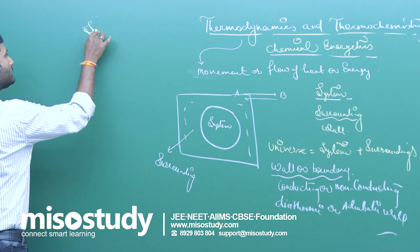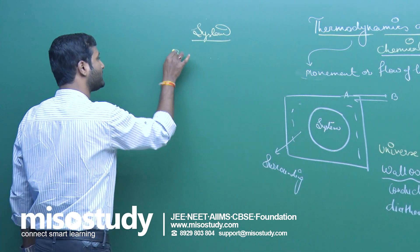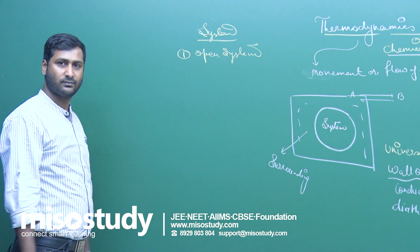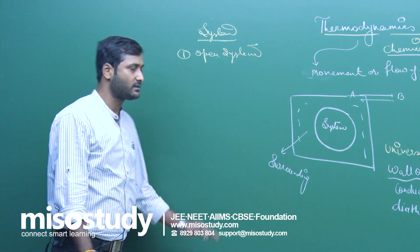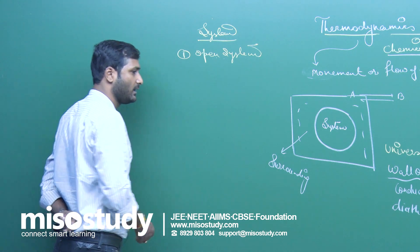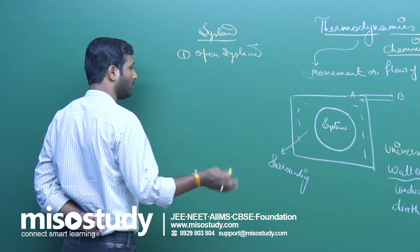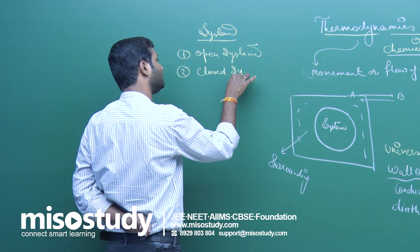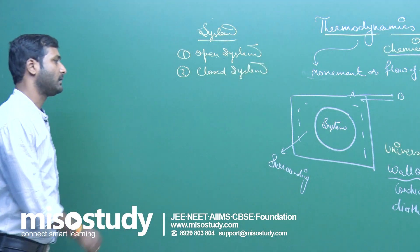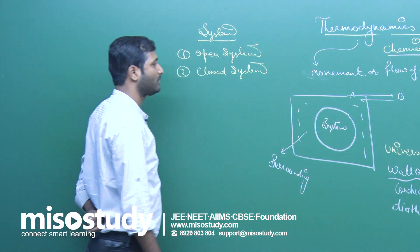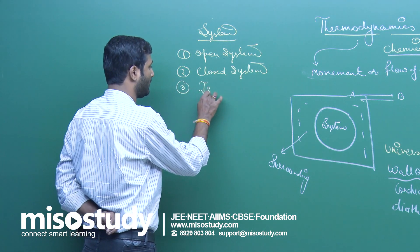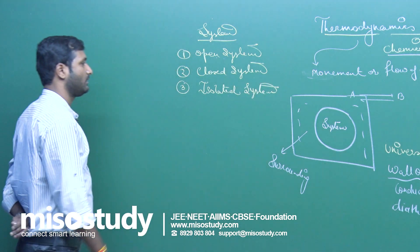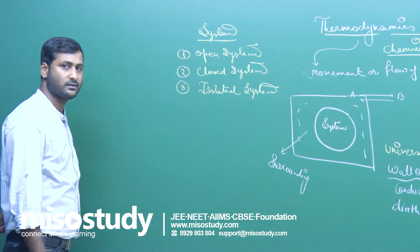We have basically three types of system. Open system: if there is an exchange of both heat and mass between system and surrounding, it is known as an open system — for example, tea in a cup. Closed system: only the exchange of energy takes place, not mass. Isolated system: neither mass nor energy exchange takes place between system and surrounding.